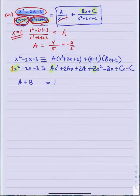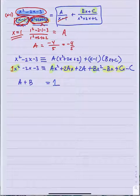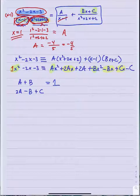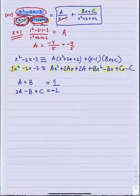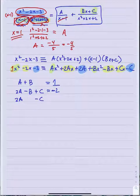Expanding: x squared minus 2x minus 3 equals ax squared plus 2ax plus 2a plus bx squared minus bx plus cx minus c. Equating coefficients — for x squared terms: a plus b equals 1. For first degree terms: 2a minus b plus c equals negative 2. For constant terms: 2a minus c equals negative 3.